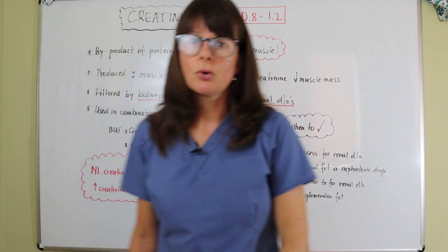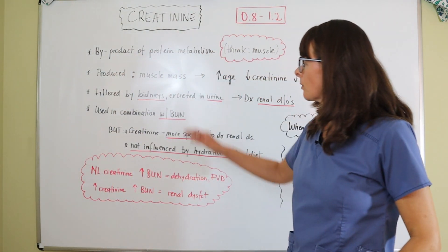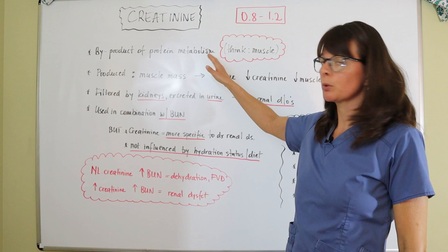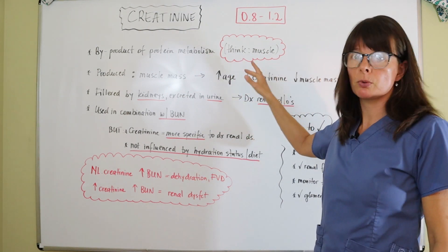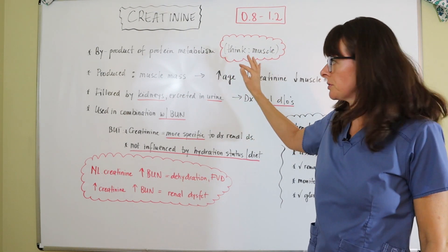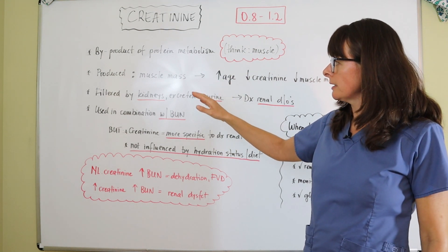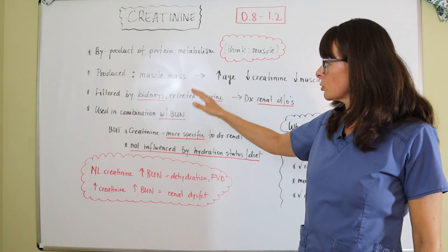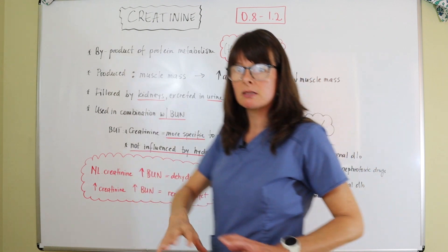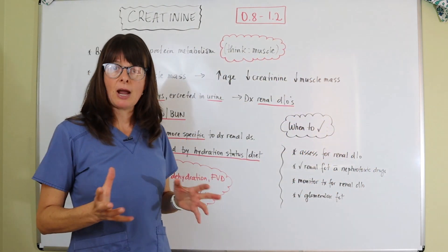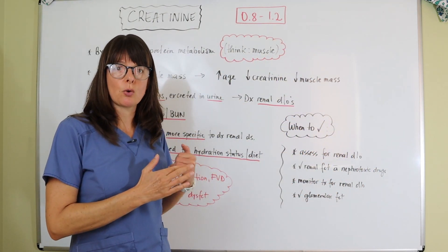Whenever it comes to creatinine, what it is is a byproduct of protein metabolism, so we always want to think about muscles. Creatinine is produced proportional to muscle mass, which means the less muscle mass you have, the less creatinine you're going to have.